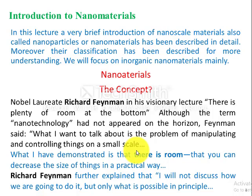What does it mean to manipulate and control things on a small scale? According to Richard Feynman, materials can be grown into smaller and smaller sizes until we reach the atomic or molecular level. This is the meaning of 'plenty of room at the bottom' — if we move from microscopic size to smaller sizes, we can reach atomic or molecular level, which is far smaller than nanomaterials.